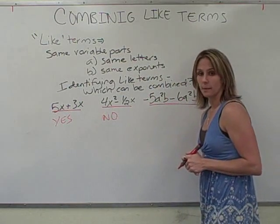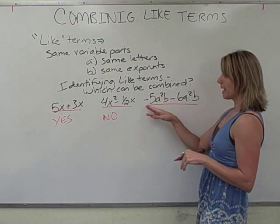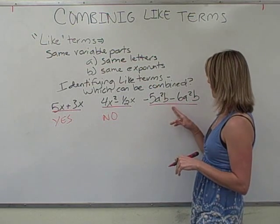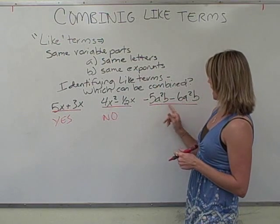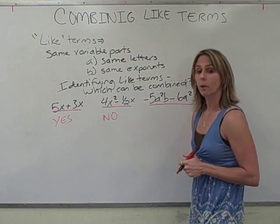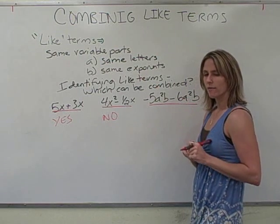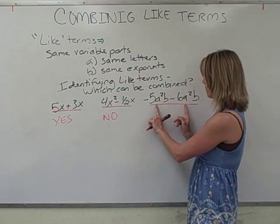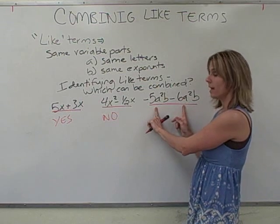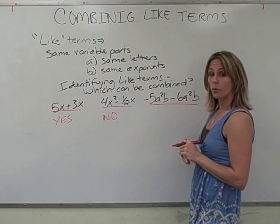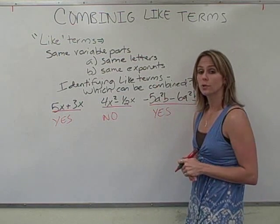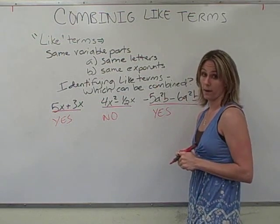Our last example, 5, negative 5A squared B minus 6A squared B. Same letters. We've got A's and B's in both. Now, do those variables have the same exponents? Well, the A's are squared. The B's have a power of 1. That is the same for both. So yes, these two terms can be combined.